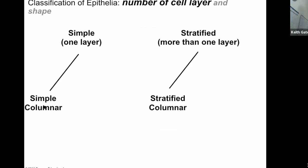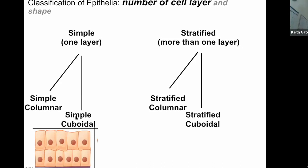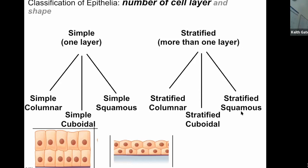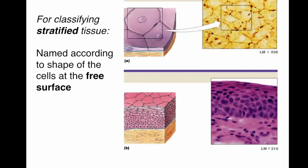For every simple cell type there's also a stratified version. If you have more than one layer, it's called stratified. So simple columnar is one layer; stratified columnar is more than one layer. The same applies to cuboidal and squamous. Three shapes combined with two types of layering — simple or stratified — gives you six types of epithelial cells.